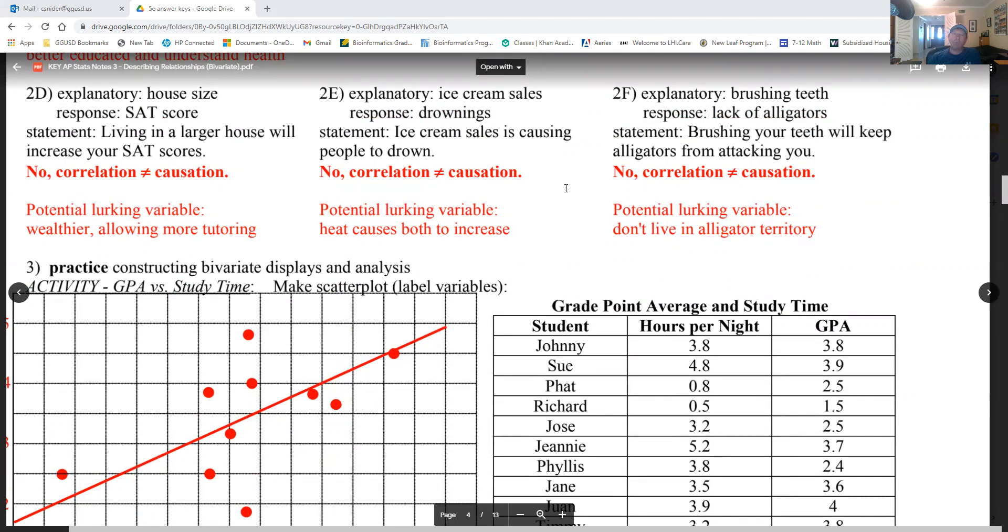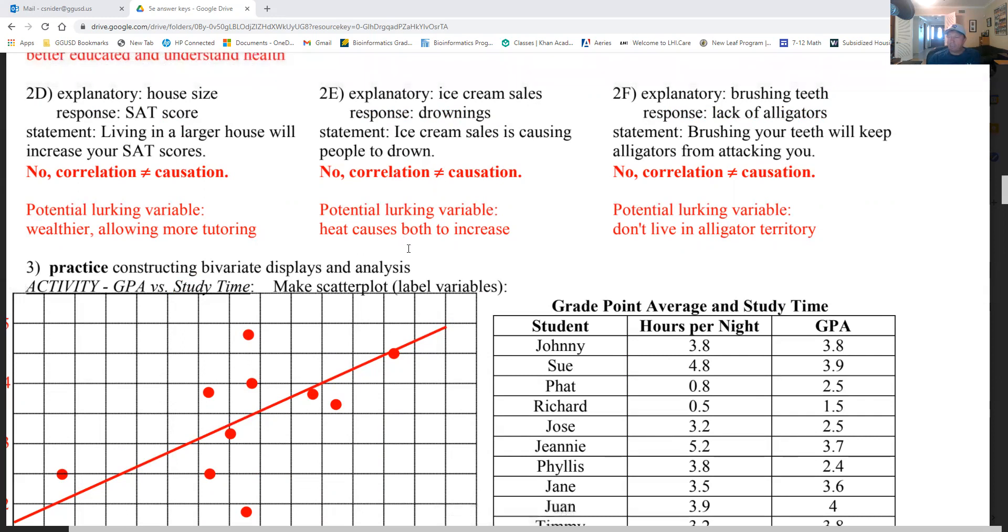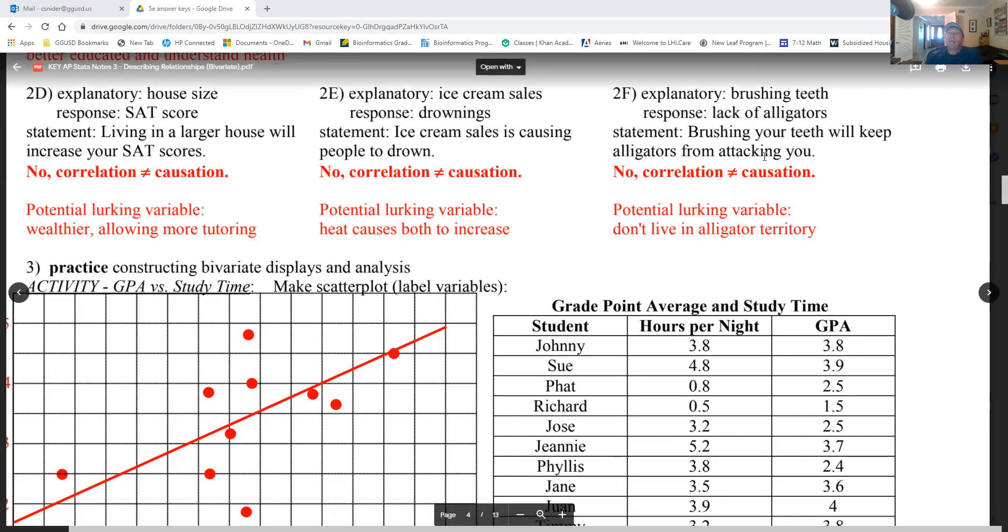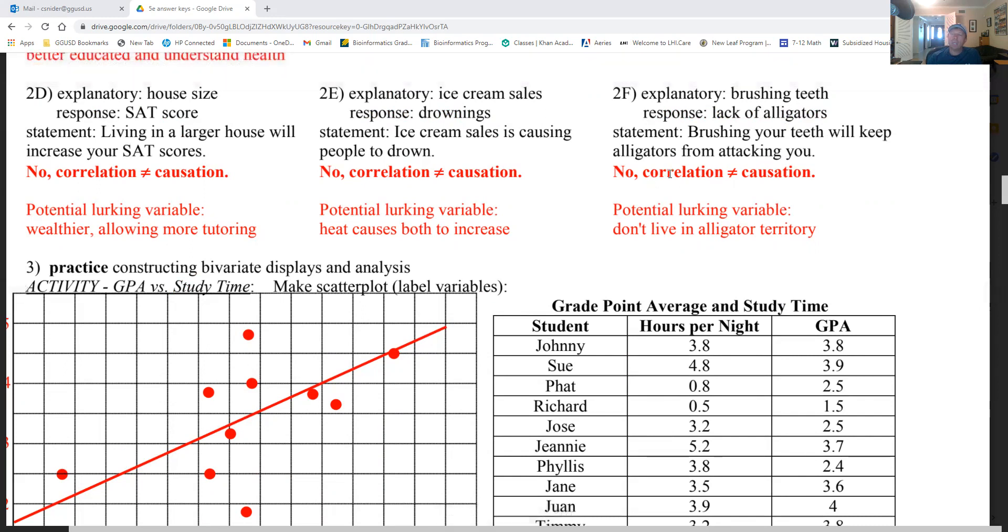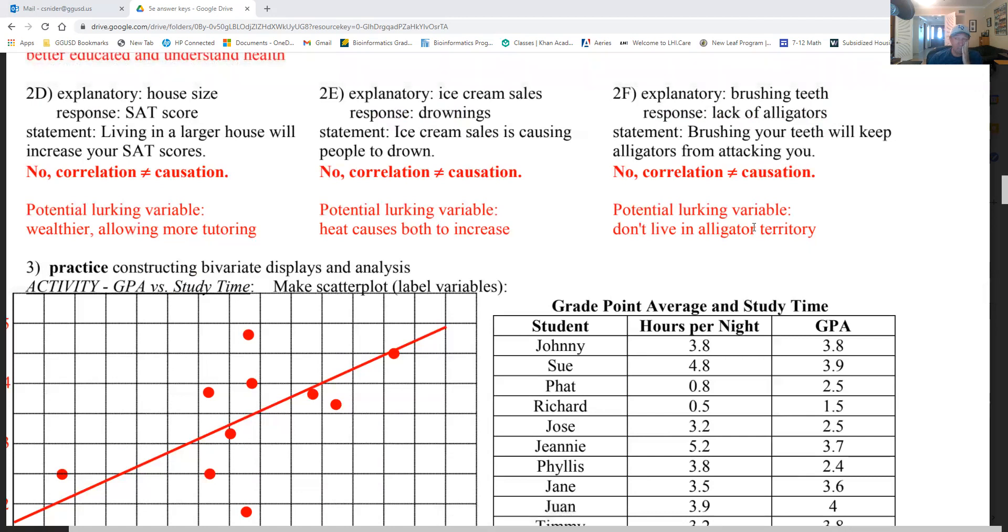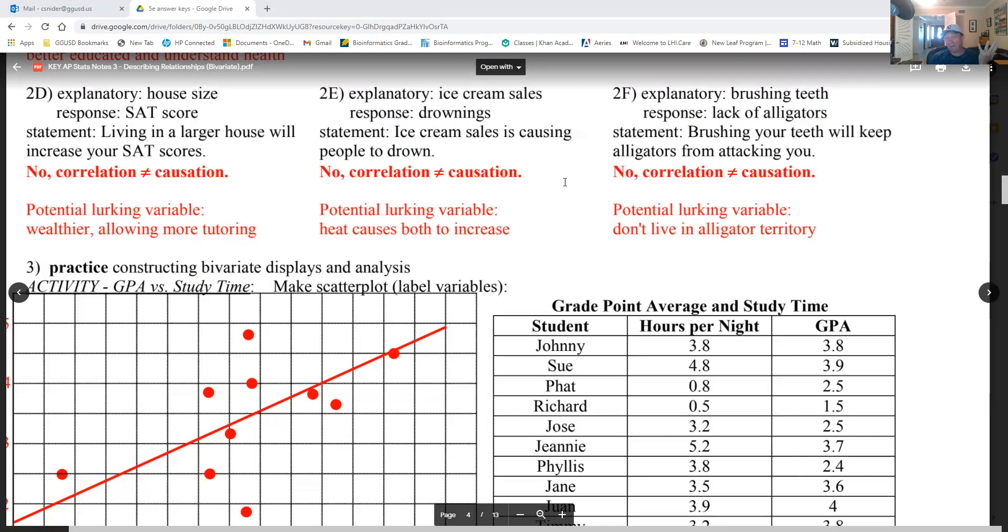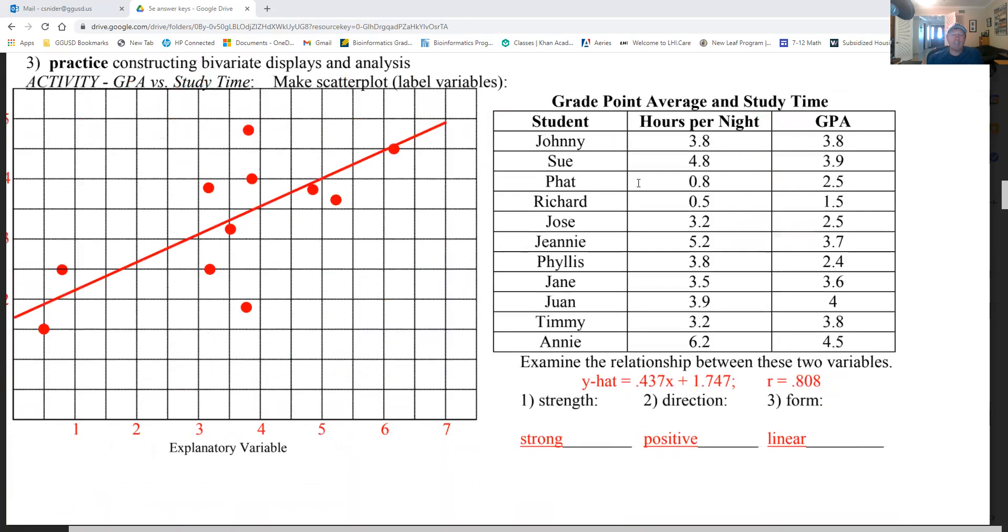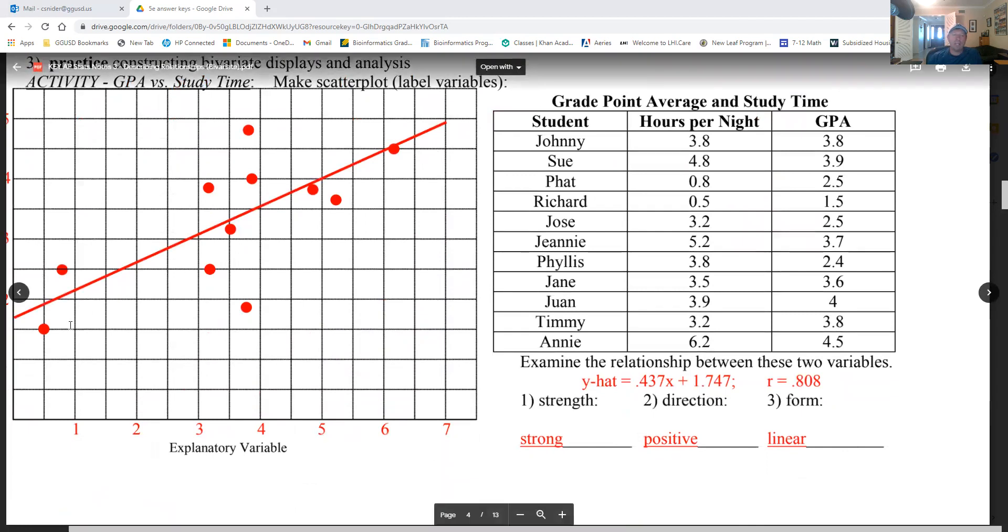Explanatory variable ice cream sales and drownings is my favorite one. It's true: as ice cream sales go up, drownings go up. Well, that's correlation. It's because heat. When it's hotter out, more people are eating ice cream, more people are swimming in the ocean or whatever, in pools. Then F: brushing teeth and the response, lack of alligators. Brushing your teeth will keep alligators from attacking you? That is not, that's correlation, not causation. We don't live in alligator territory here. So what's funny is they say that maybe there's less teeth brushing in the bayou in Mississippi or something like that, and they have alligators there. So that's what the correlation is. Last activity: this is cool. So GPA and study time.